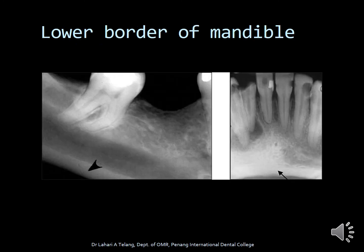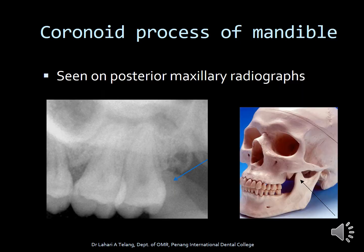The lower border of the mandible is visible as a dense radiopaque line in both the anterior and posterior regions. The coronoid process of the mandible is interestingly seen on posterior maxillary radiographs as a dense triangular shadow, along with the condyle.